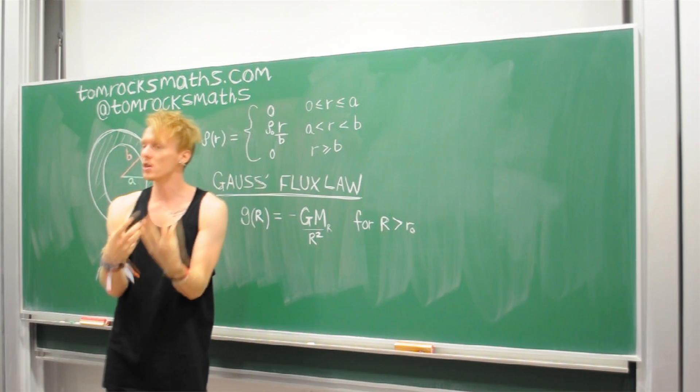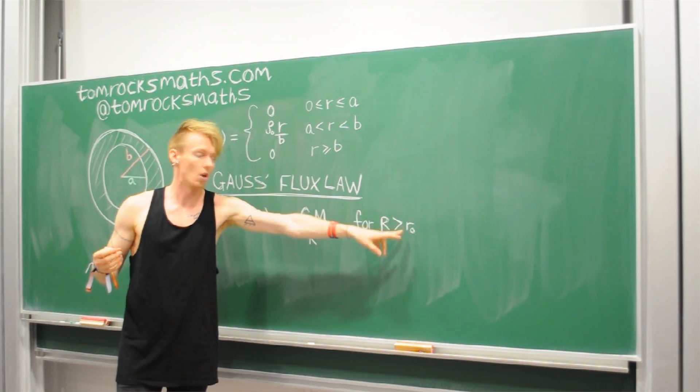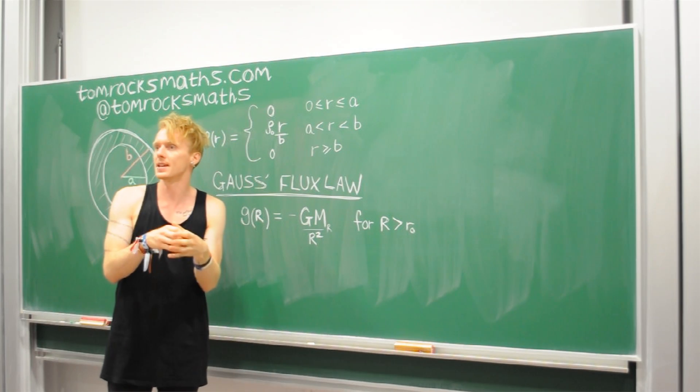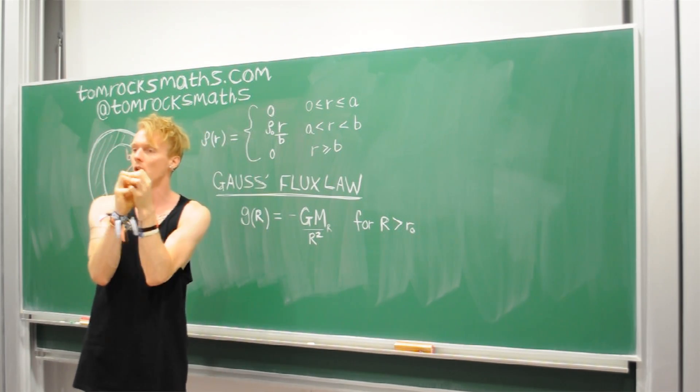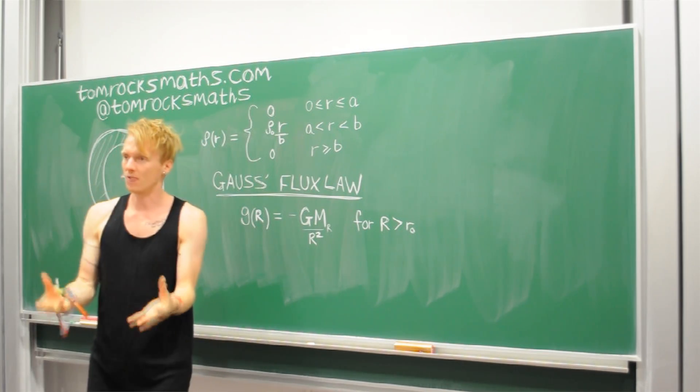So for Newton's universal law of gravitation, you would have to take the limit as your R tended to zero. So you'd have to shrink in onto that central point, and that would recover Newton's law of gravity.